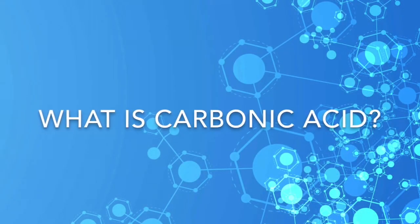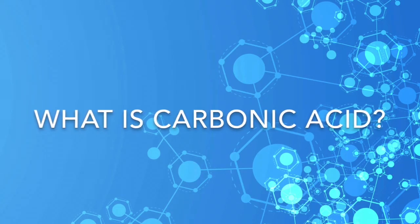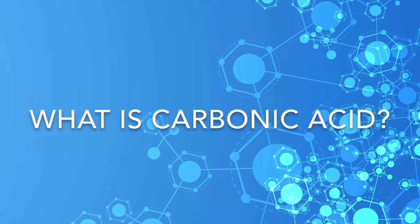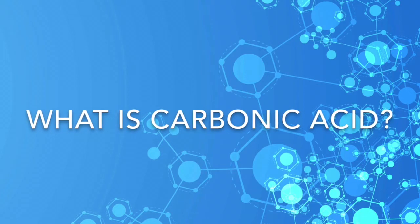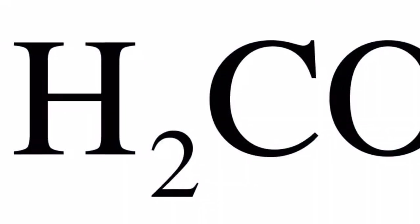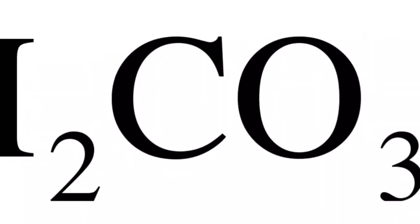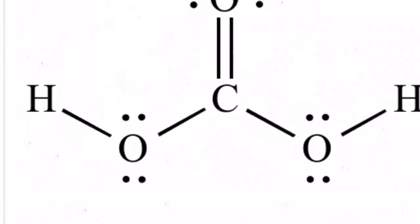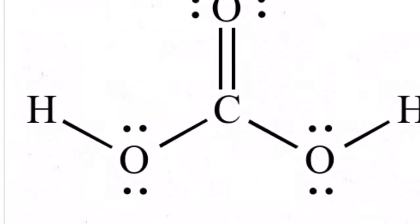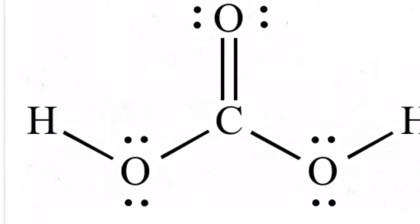Carbonic acid is a very weak acid formed in solution when carbon dioxide dissolves in water. When carbon dioxide is dissolved in water, this reaction is in equilibrium, which means that carbonic acid reversibly forms carbon dioxide in water. The formula of carbonic acid is H2CO3, and it is a chemical structure that contains a carboxyl group and two hydroxyl groups. It is a diprotic acid that can release two protons, but it is only weakly acidic because of the strong OH bonds.